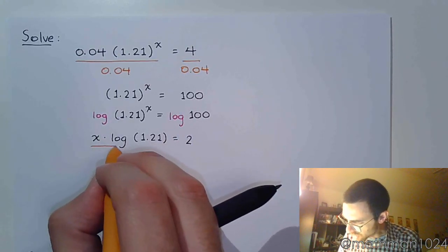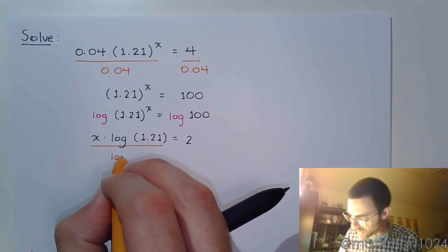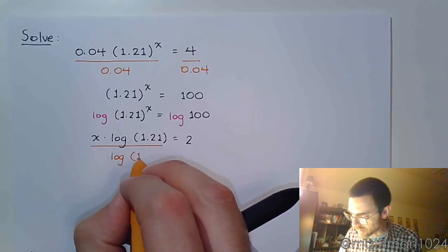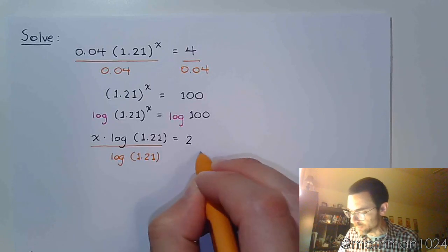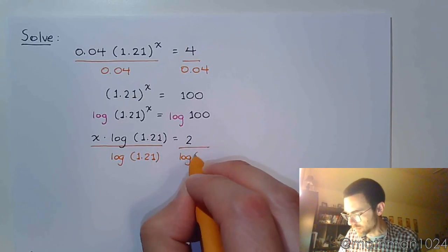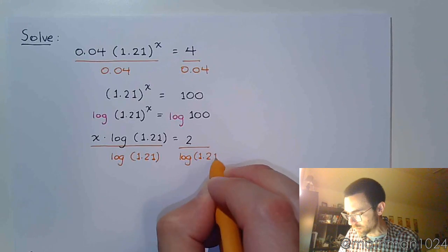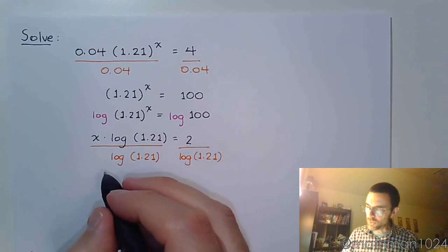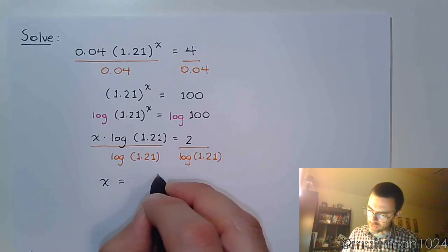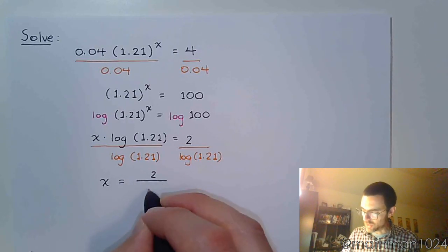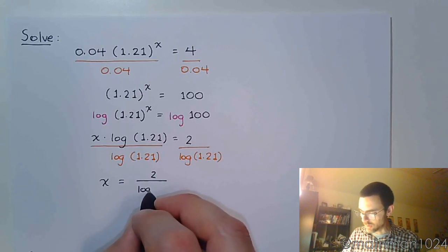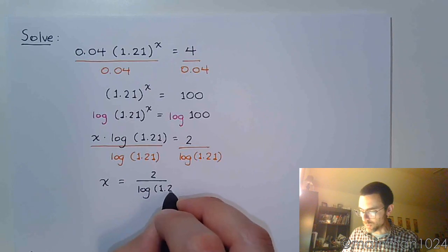And then we can finish solving this by dividing both sides by the log of 1.21. So there's your exact value. It is exactly 2 over the log of 1.21.